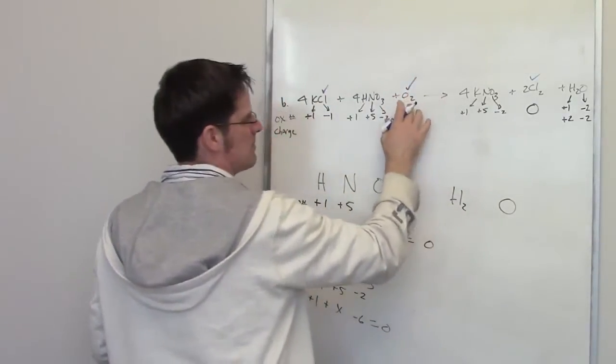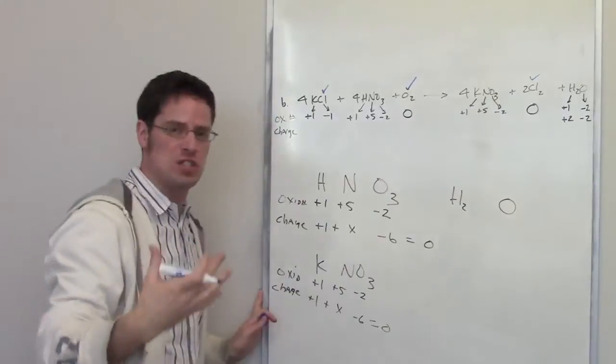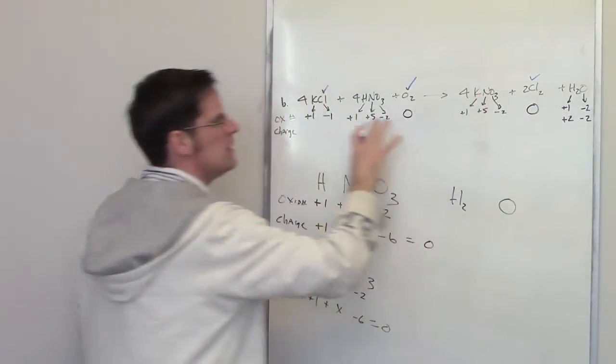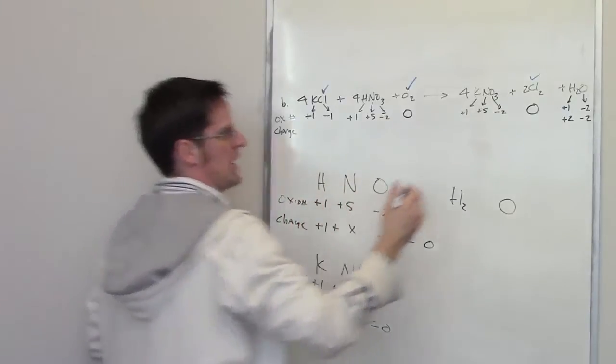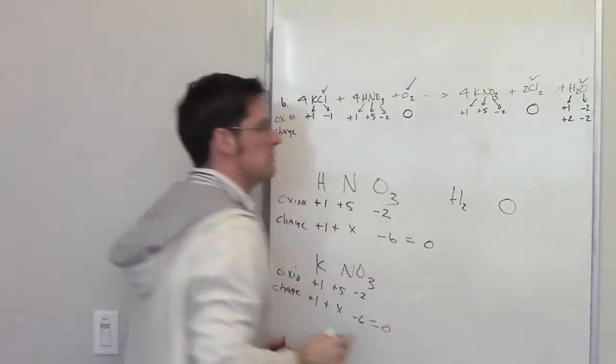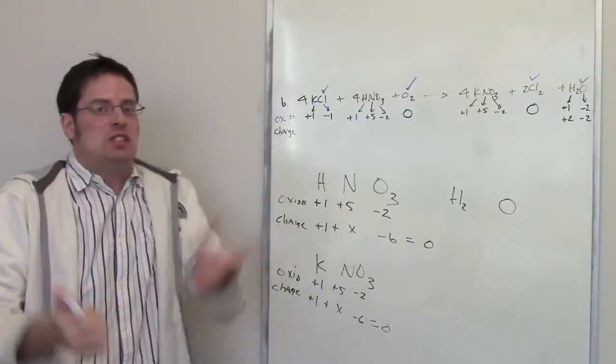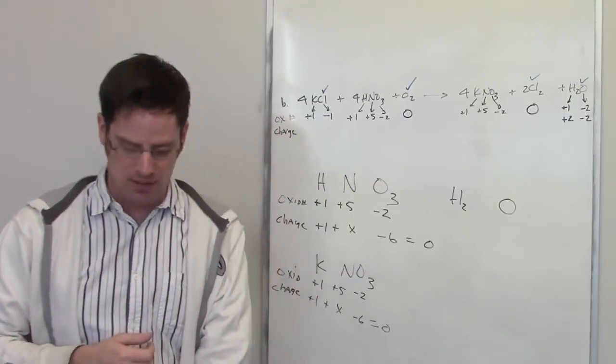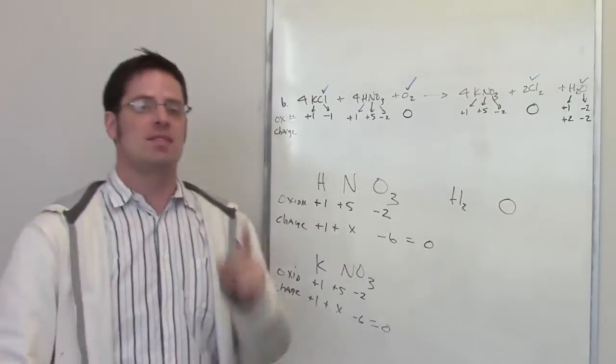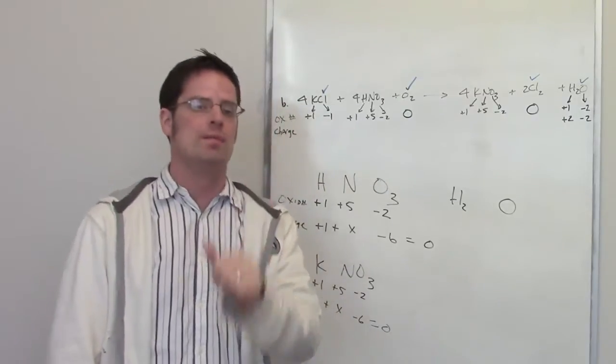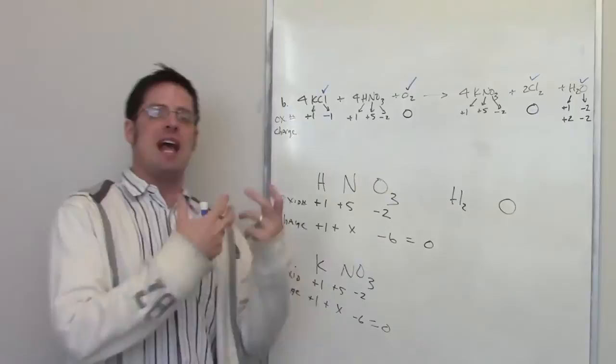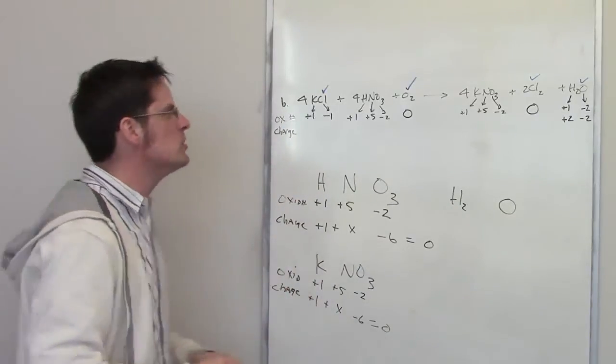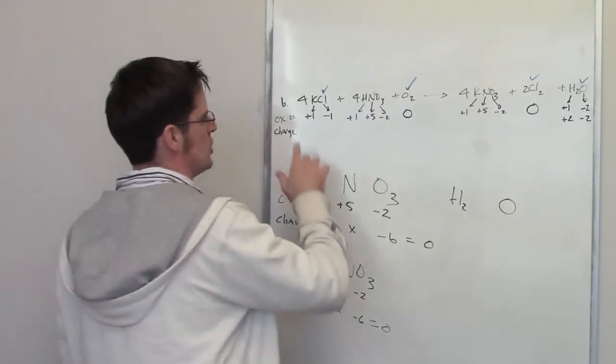So some of these oxygen atoms that started out as having an oxidation state of zero got incorporated into either the KNO3 or the H2O and had some kind of change. So now that I've discovered which elements undergo or experience a change, I have to determine which one's been oxidized, which has been reduced.